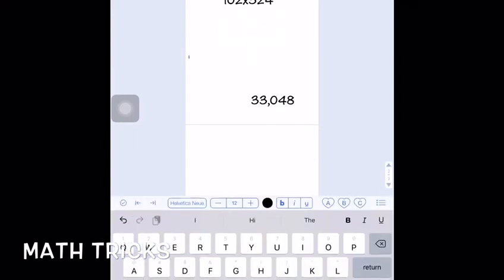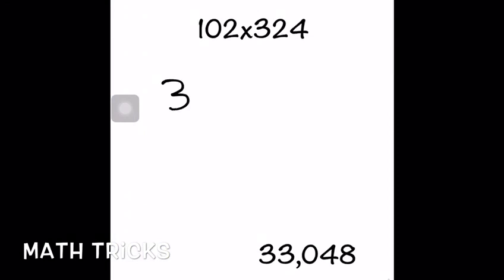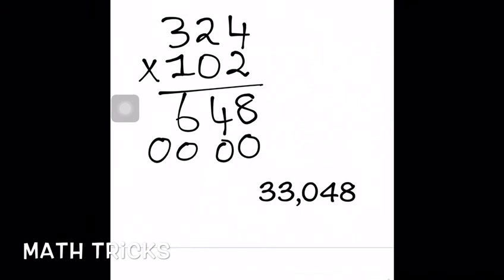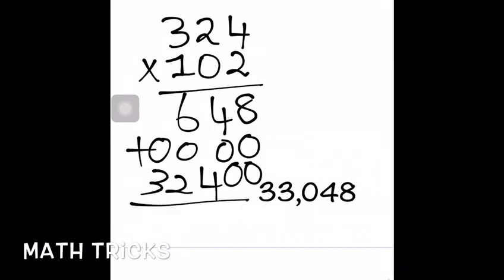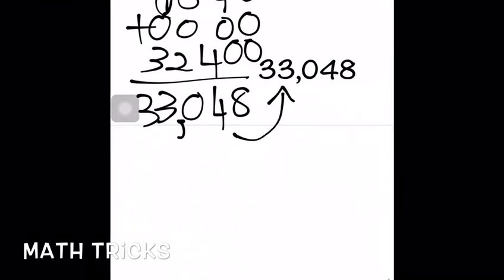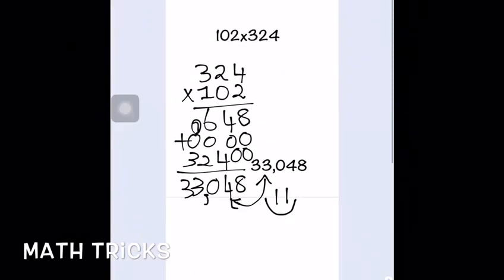Now we're going to check the answer the same way — just doing it in the normal way. When you check two or three problems this way, you'll see how easy this trick is. Look, we're multiplying 324 by 102 the normal way, and you get the same answer. Using the trick you do it easier and faster, and the problem becomes simple enough to do in your head.